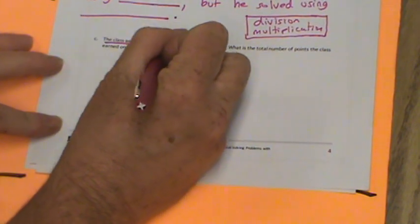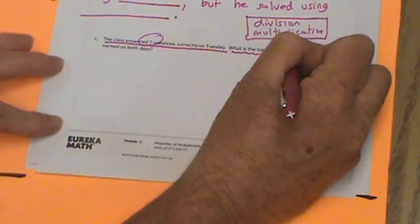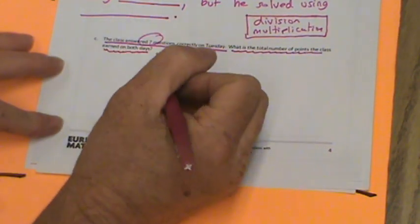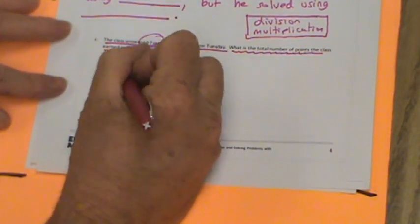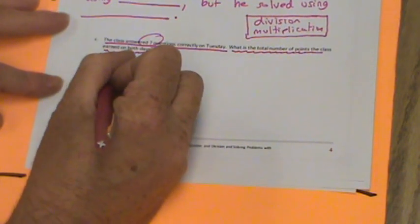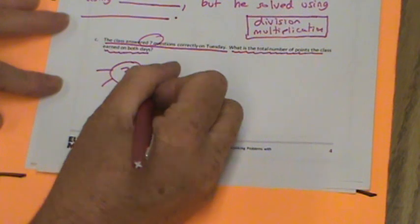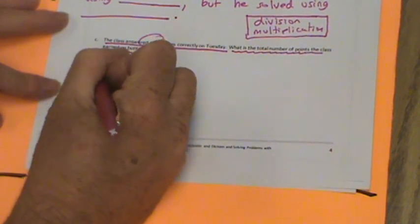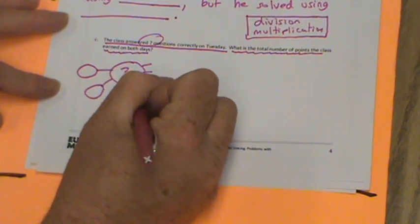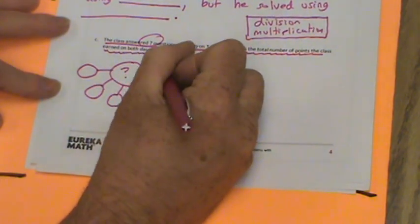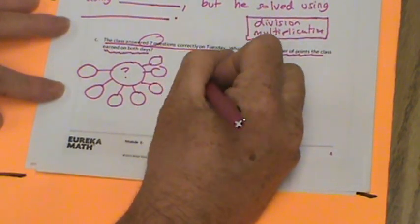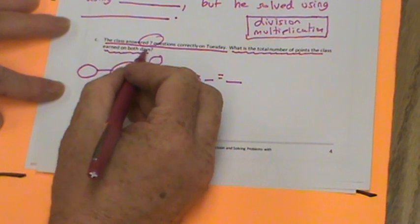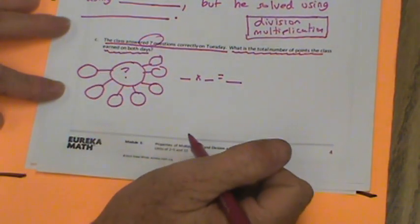The class answered seven questions correctly on Tuesday. What is the total number of points the class earned on both days? So on the day that they got 50 points and on this day when they got seven questions correctly. So remember they get five points for each correct question. We're going to put a question mark here and one, two, three, four, five, six, seven.